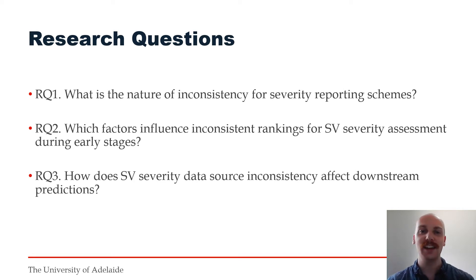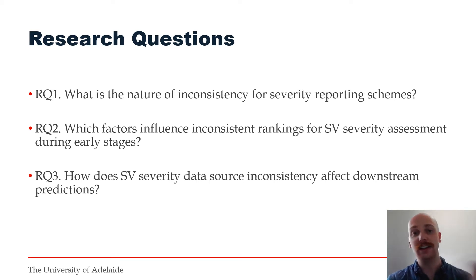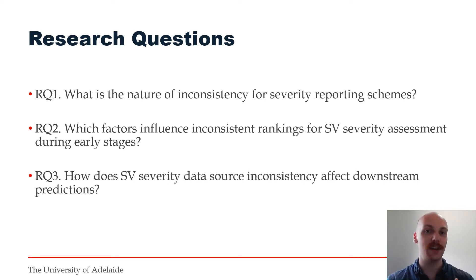Firstly, we investigate its nature by determining the actual prevalence and trends of differing severity rankings across these data sources. Primarily, we aim to raise awareness of this issue. Next, we investigate quantitative and categorical bug report attributes that may lead to vulnerabilities receiving an inconsistent assessment later on. By pinpointing correlating factors across data sources, we can promote aspects that may lead to better severity assessment and judgement.